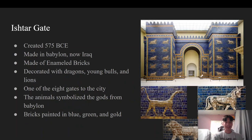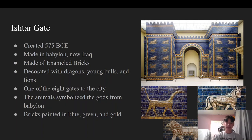Next I will be talking about the Ishtar Gate. The Ishtar Gate was created in 575 BCE and it was made in Babylon, which is now Iraq. This beautiful gate is covered in a dark blue color.